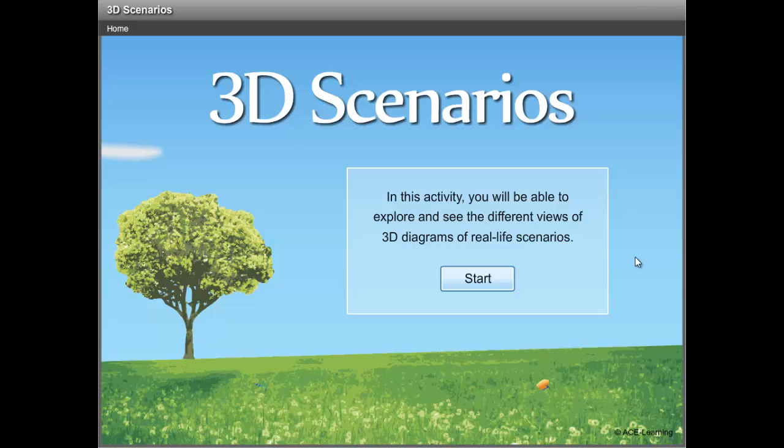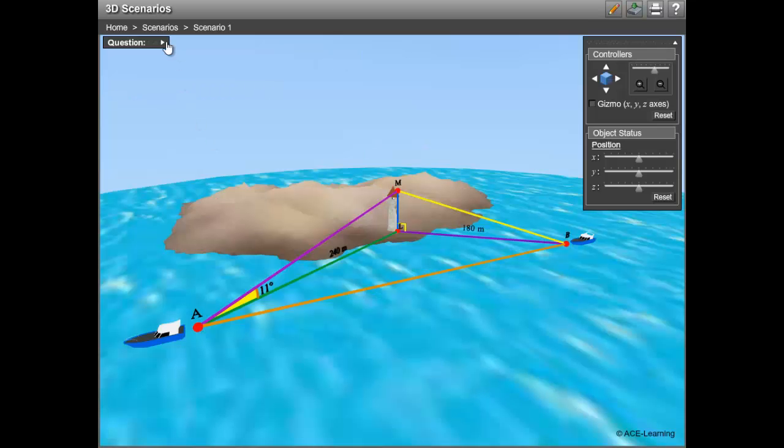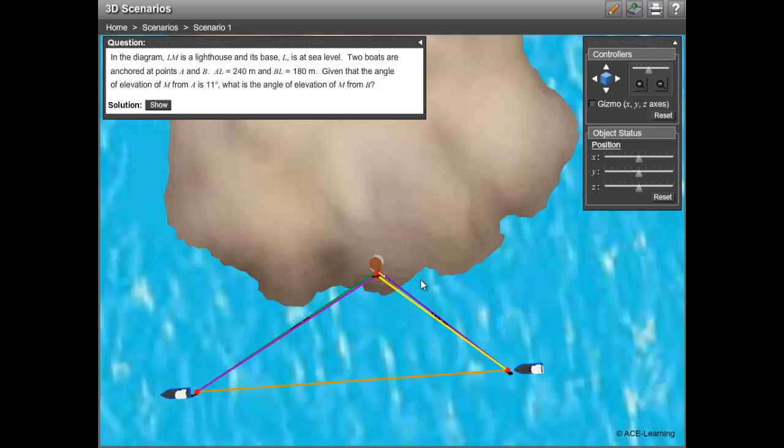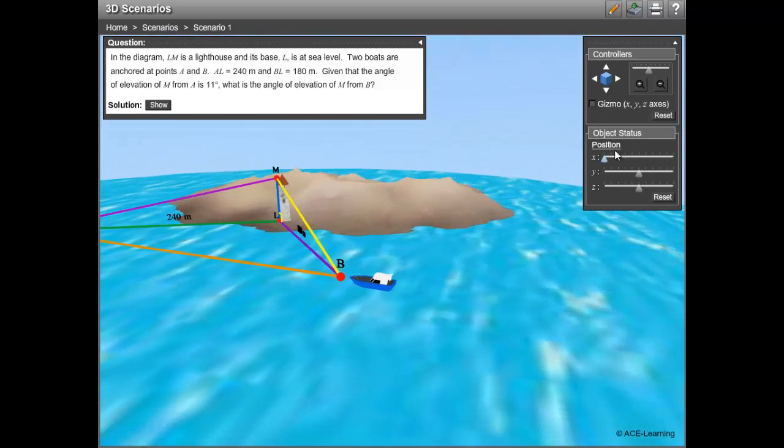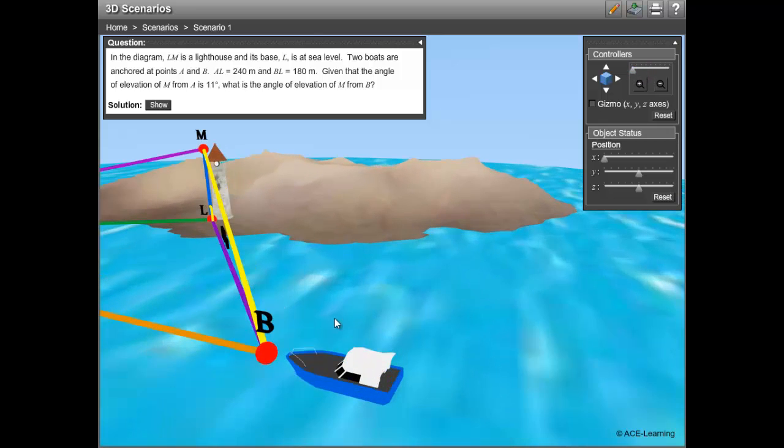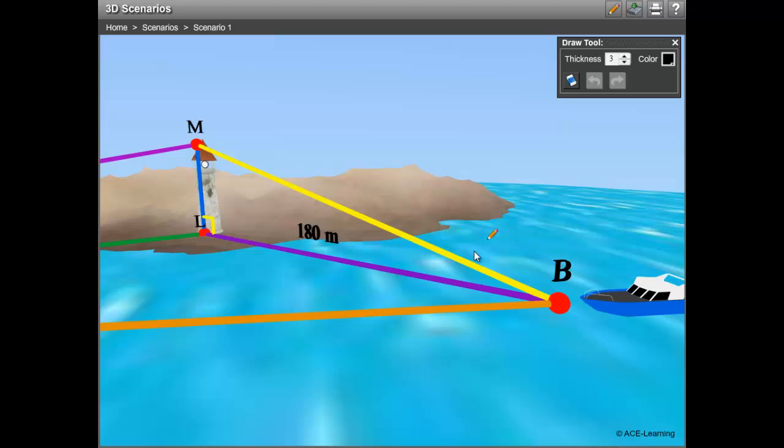Now the third 3D tool is for 3D diagrams of real-life scenarios. Let's select a scenario. First, view the problem. We are to find the angle of elevation of M from B. Next, locate the triangle where the required angle is. Right, it is in this triangle. And this is the required angle.